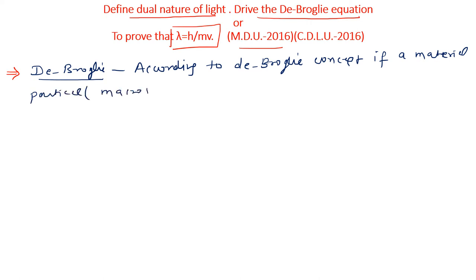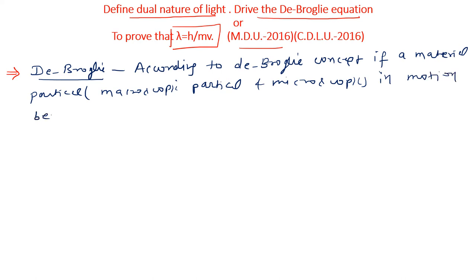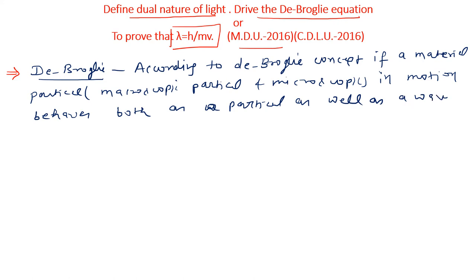According to de Broglie's concept, if a material particle — whether it is a microscopic particle or a macroscopic particle — is in motion, it behaves both as a particle as well as a wave. कोई भी material particle यदि motion में है, तो वो particle और wave दोनों तरह की behavior को show करता है।